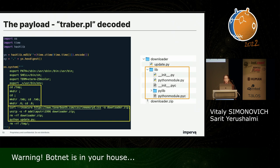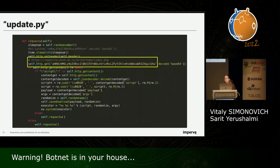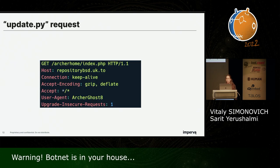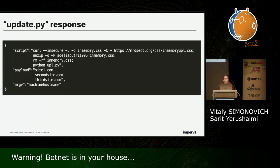Let's see what update.py is doing. Here is a partial screenshot of the code, which sends HTTP requests to Repository B — what we believe is the C&C. To understand the purpose of update.py, we mimicked the request. The user agent contains a special phrase, 'ArcherGhost8', and without it, no response will be received. As a response to a valid request with this header, the victim — in this case, us — will receive a JSON response.